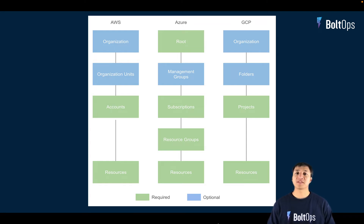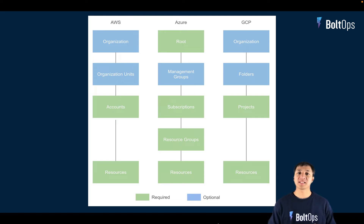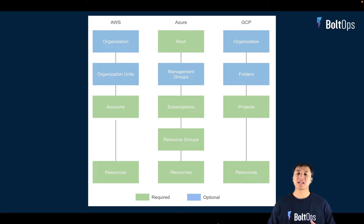With Azure, you have a subscription, and the subscription is kind of like an AWS account, at least on that level — that's where billing also happens. But with Azure, underneath the subscription, there's something called a resource group. It's essentially a logical container so you can group all your resources together. You can think of it basically like a namespace.